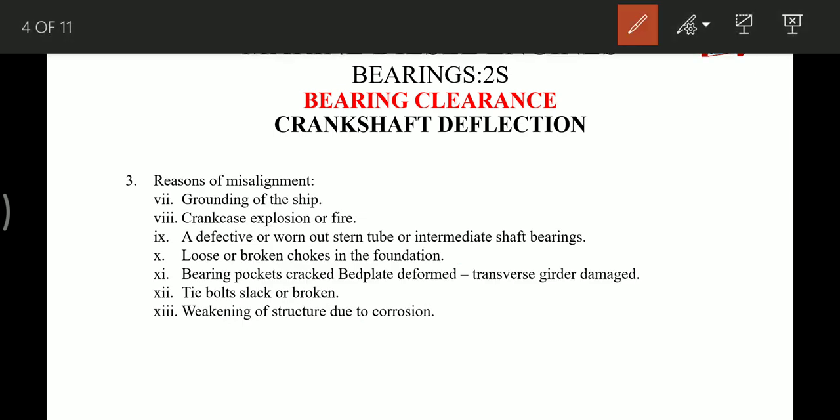Then we have grounding of the ship, crankcase explosion that can affect the misalignment, defective or worn out stern tube or intermediate shaft bearing, loosened or broken chocks in the foundation, worn pockets, cracked bed plate deformation which is there in the transverse girder damage, tie bolt slackened or broken, then weakening of the structure due to corrosion. So these are all the reasons for misalignment that can take place.